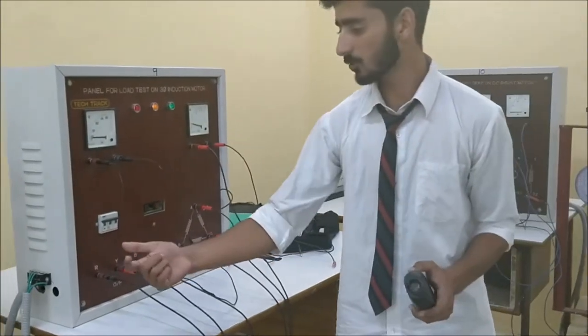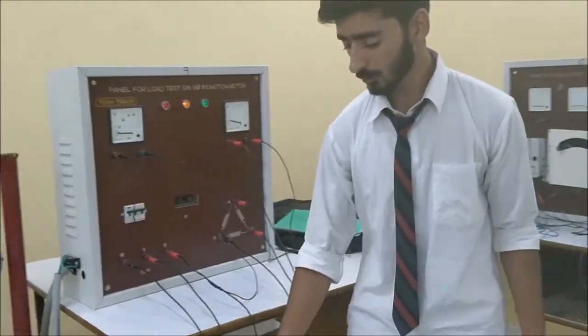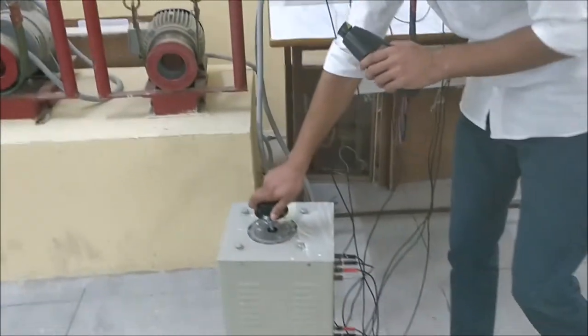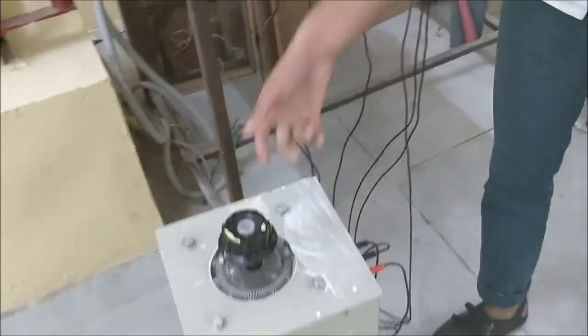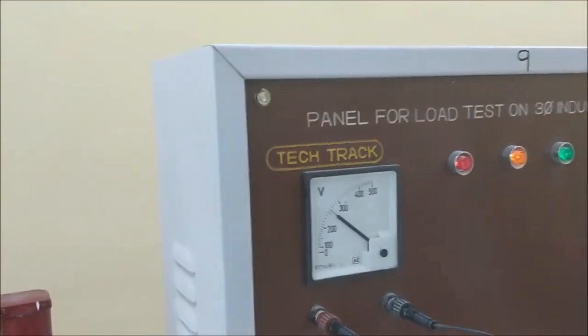How can we change the speed of this motor? We have to turn this knob in the clockwise direction while changing the voltage. Let's see. We are changing the voltage. The voltage goes to 250 volts.